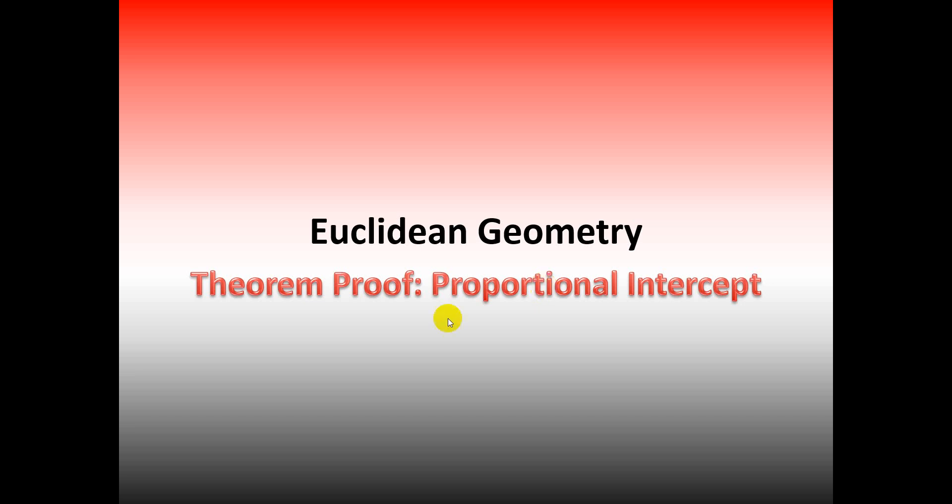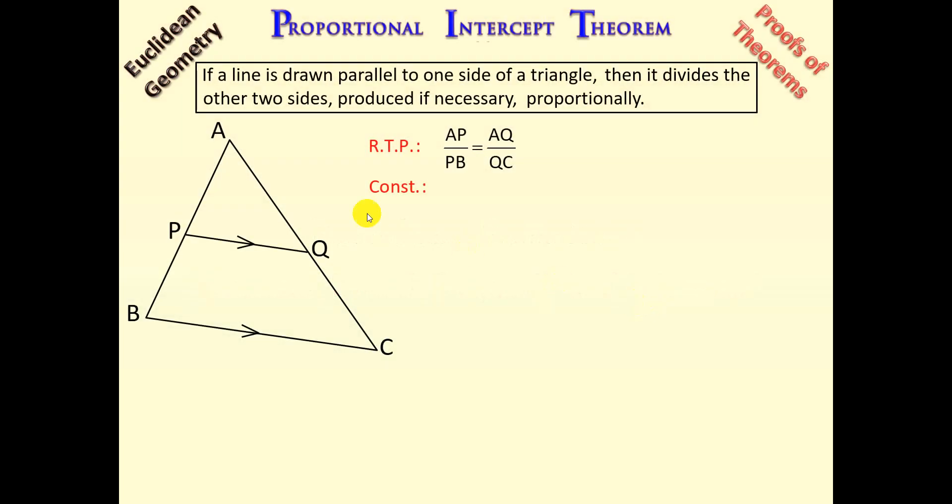Hi, in this video we're going to prove the proportional intercept theorem for grade 12 Euclidean geometry. So we want to prove that AP over PB, as we can see in the diagram, is equal to AQ over QC.